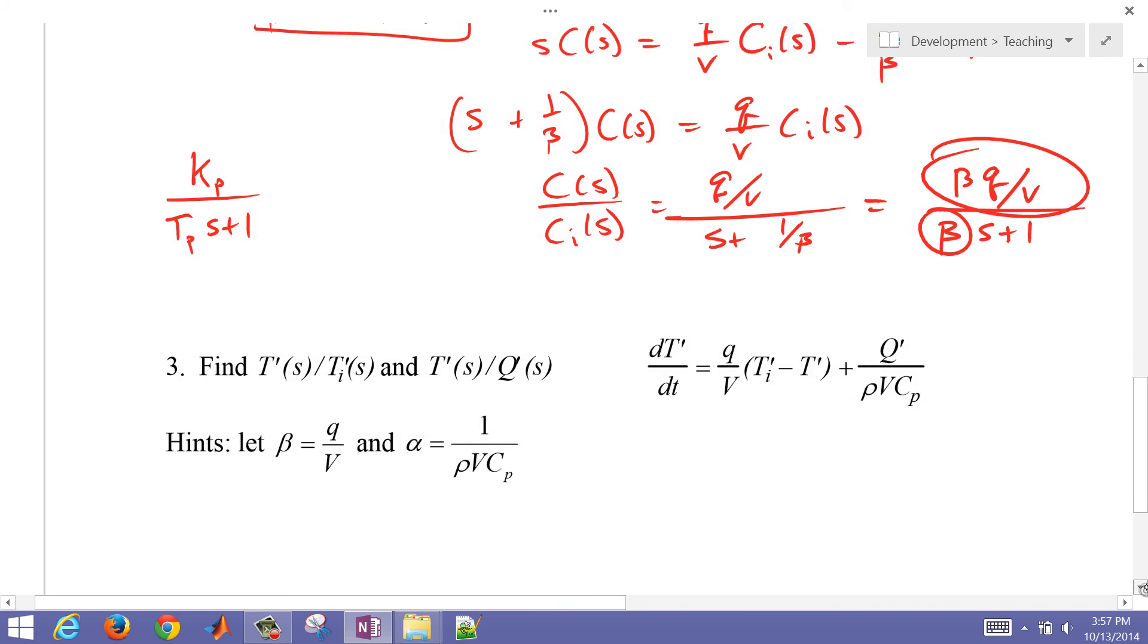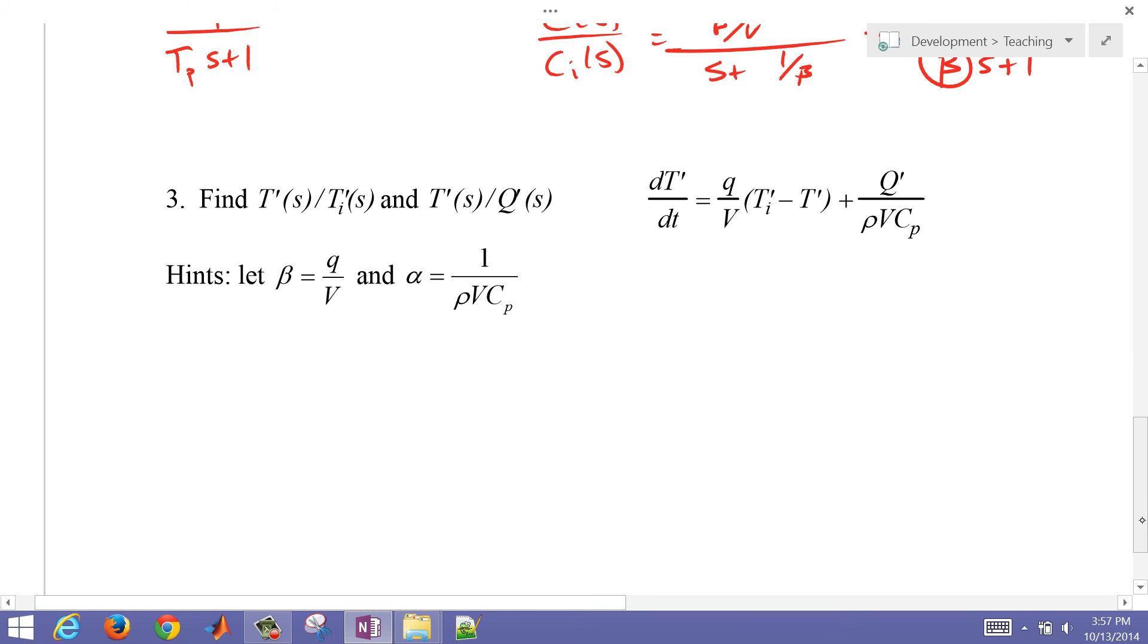So let's go on down to a final one here. Now, this one is from an energy balance equation, and I'm trying to get two transfer functions. One is for how the temperature is affected by an inlet temperature, and then another one by a heater, as a heater output or a Q value. And I also have some terms that can help me simplify, so I'll just use alpha equals 1 over rho V C sub P, and beta is Q over V.